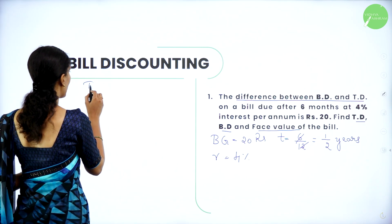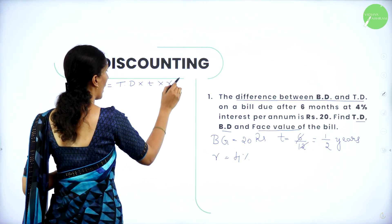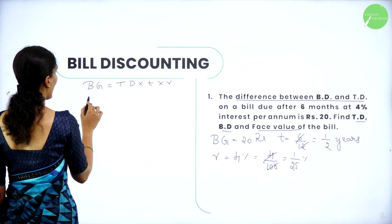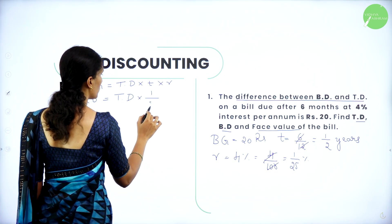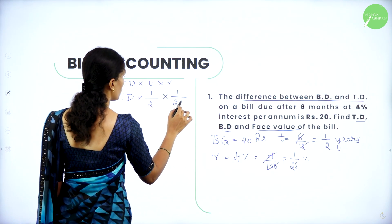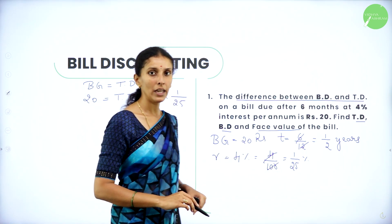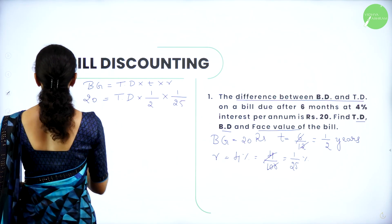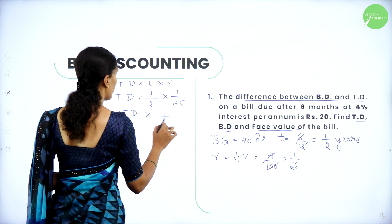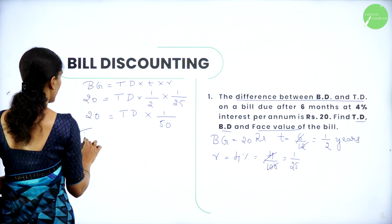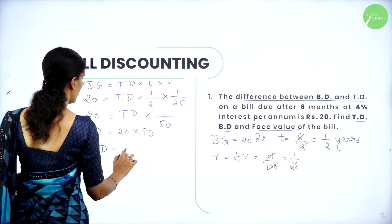We know the formula for banker's gain in terms of true discount — that is TD into T into R. Banker's gain is 20, T is 1 by 2 and R is 1 by 25. The 4% is calculated as 4 by 100, which is 1 by 25 in terms of fraction. So 20 equals TD into 1 by 50. Cross-multiplying, TD equals 20 into 50.